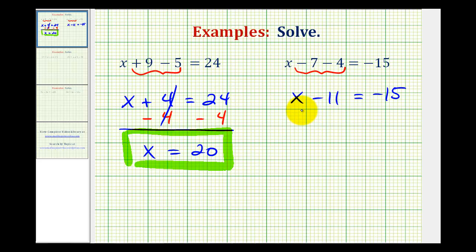And again, to isolate x, we need to undo this minus 11, and the opposite of minus 11 would be plus 11. So we need to add 11 to both sides of the equation. Minus 11 plus 11, that would be 0, so we have x equals negative 15 plus 11 is equal to negative 4. So our solution is x equals negative 4.